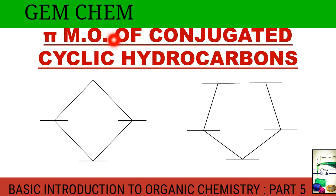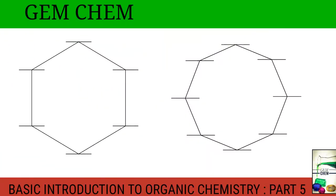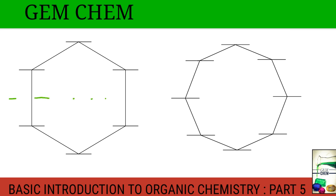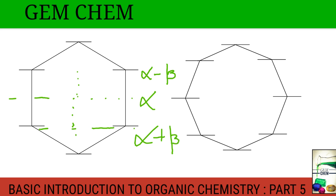Now let us look at the π molecular orbital energy levels of conjugated cyclic hydrocarbons. For n=4 (butadiene-like system), n=5 (pentadienyl system), n=6 (benzene), and n=8 (cyclooctatetraene with eight carbons), each has a specific energy radius. The central reference energy is called α. Levels above the midpoint are at α minus β (higher energy, antibonding) and levels below are at α plus β (lower energy, bonding).